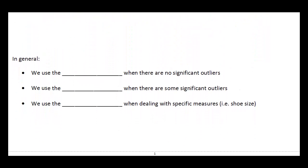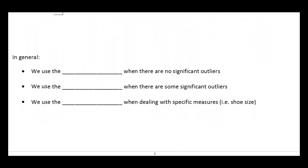So we have some general guidelines to go by. What we can say is if there are no significant outliers, then generally we're going to use the mean. That is, if all of our numbers are fairly close together. If there are some significant outliers, then we're going to use the median.